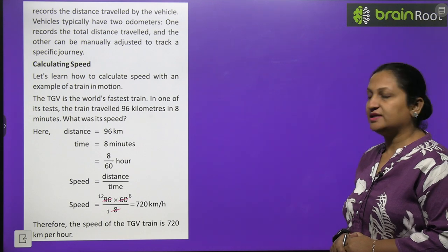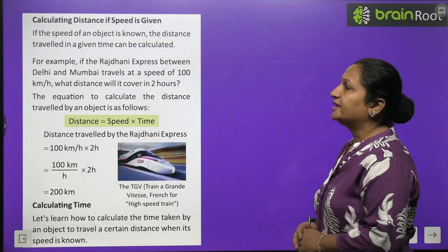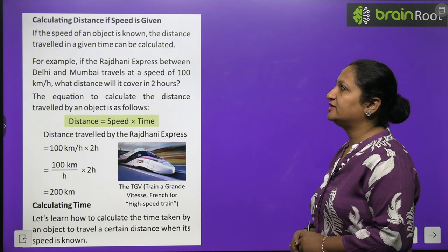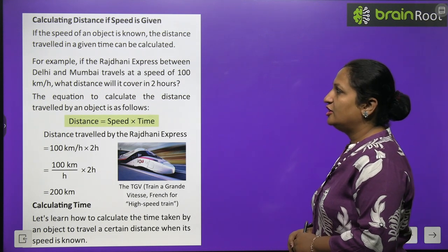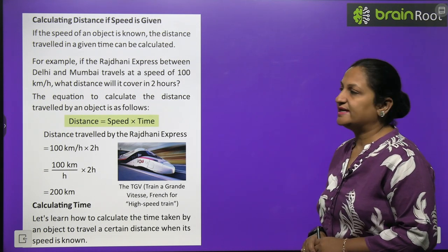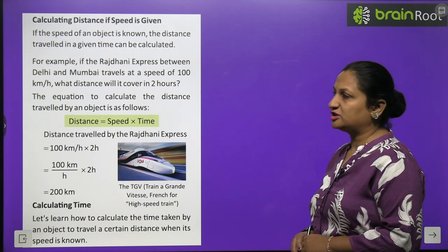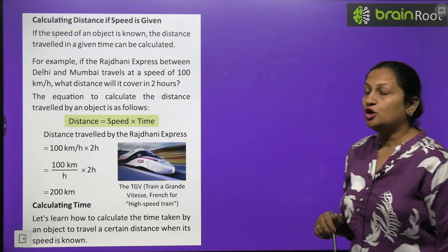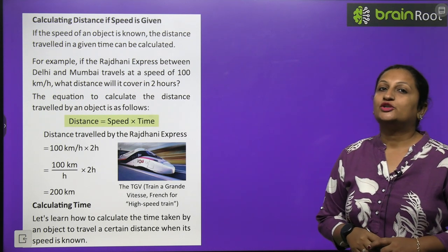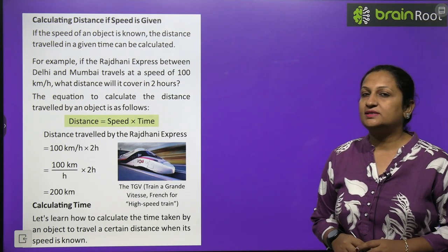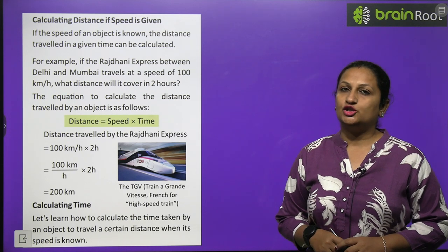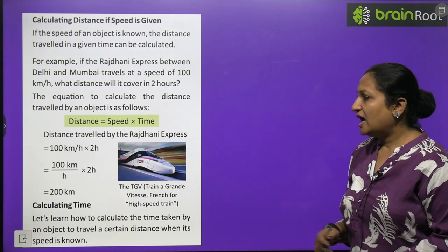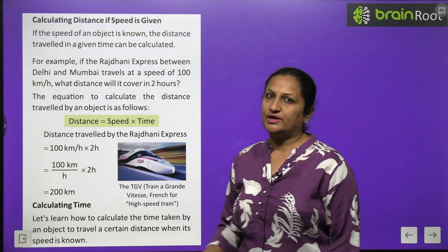Calculating distance when speed is given: if the speed of an object is known, the distance traveled in a given time can be calculated. For example, if Rajdhani Express between Delhi and Mumbai travels at a speed of 100 km per hour, what distance will it cover in 2 hours? Here, speed and time are both given. Distance equals speed × time, so 100 multiplied by 2 gives an answer of 200 km.